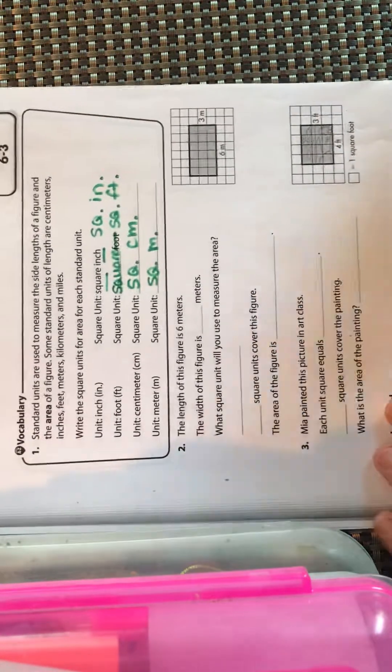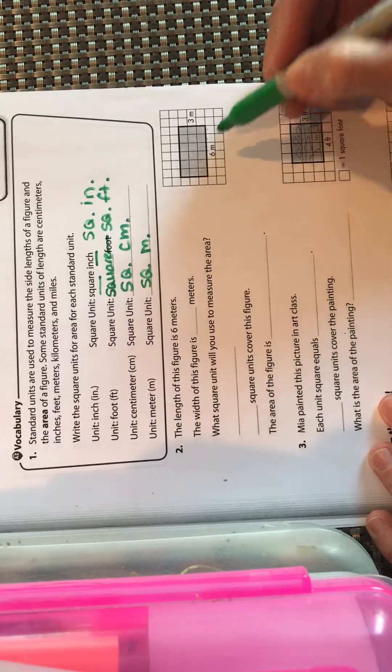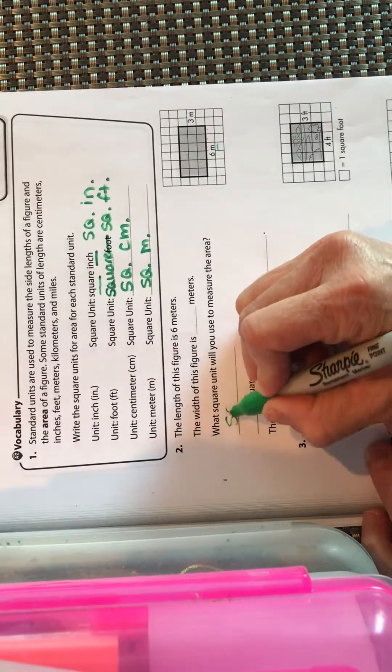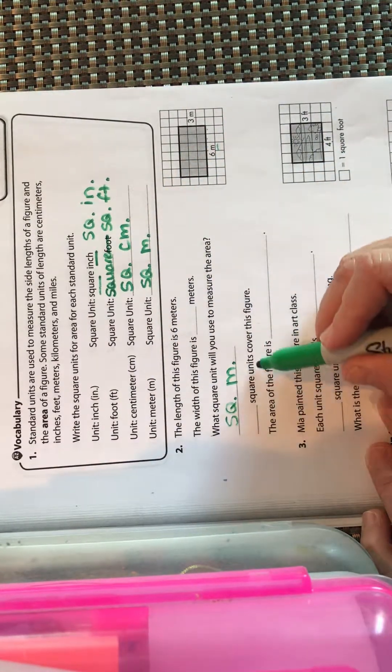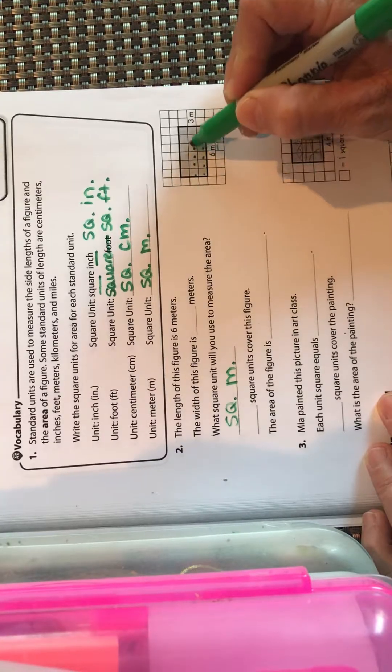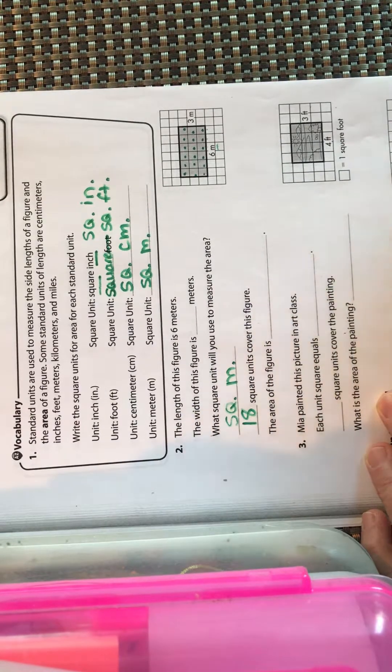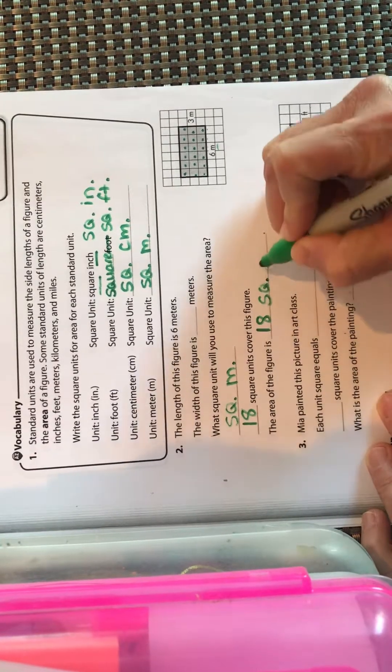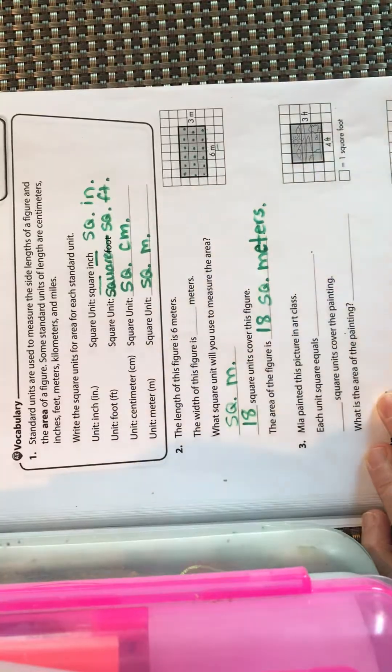They're telling us the length of this figure is six meters, so basically each square is one meter long. What square units will you use to measure the area? Obviously going to be square meters because that's what they're telling us to use. How many square units cover this figure? We have six going across, so that's 6, 12, and 18 square units cover the figure. There's 18 boxes that are filled in, so the area of the figure would be 18 square meters. You could write out meters if that's easier for you.